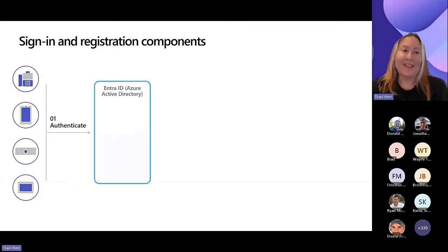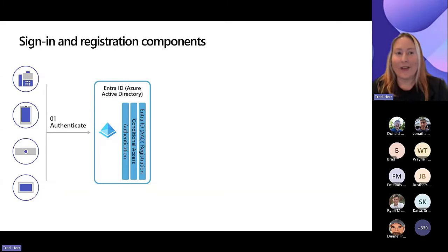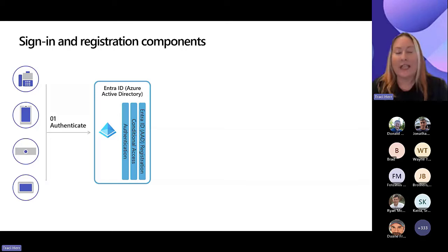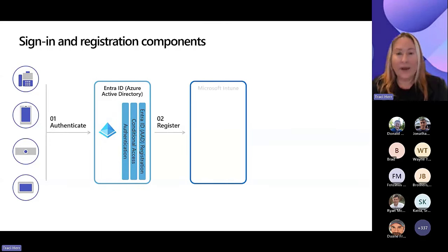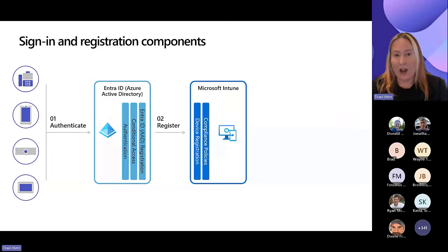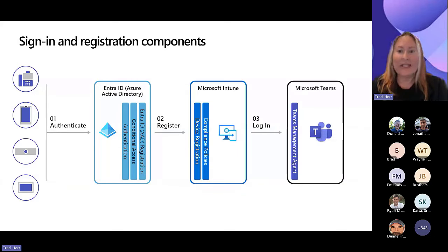First, we're going to take a high-level look at what it looks like when you're signing into a Teams device — a phone, an MTR, anything running the Android operating system. First, we're authenticating using Entra to do our registration, which includes going through conditional access. Then we're registering using Intune, creating a device object in Intune, and then finally getting over to Teams.